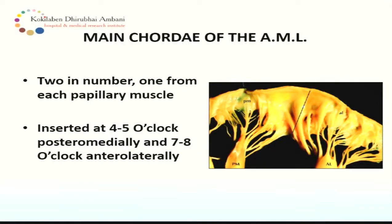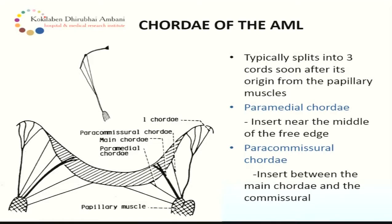This is an endo-ventricular view of the anterior mitral leaflet showing the main strut chordae. There are two in number, one from each papillary muscle — one from the anterolateral papillary muscle and one from the posteromedial papillary muscle. They are inserted at four to five o'clock or seven to eight o'clock anterolaterally. These chordae typically split into three soon after their origin, before the insertions. The main strut chordae and commissural chordae are visible, and what is in between are the paramedial and paracommissural chordae.